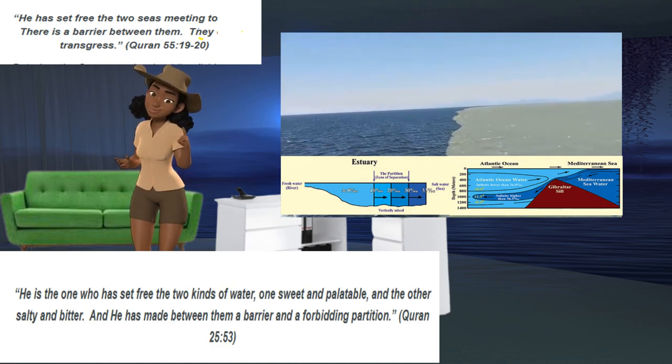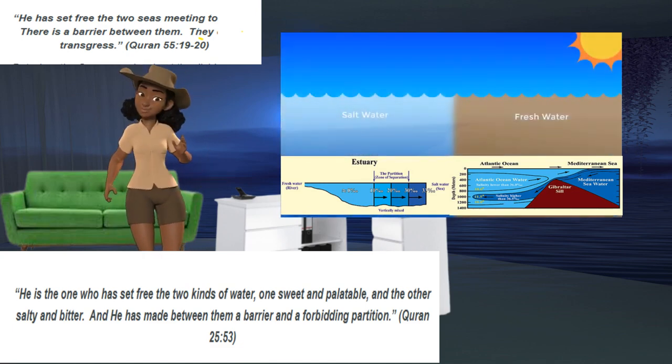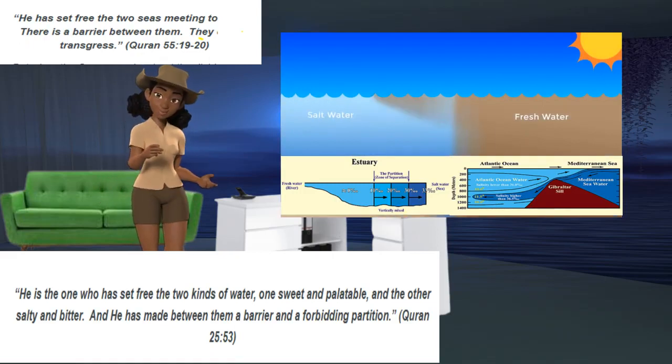God has said in the Quran, He is the one who has set free the two kinds of water, one sweet and palatable, and the other salty and bitter. And He has made between them a barrier and a forbidding partition. Quran 25:53.